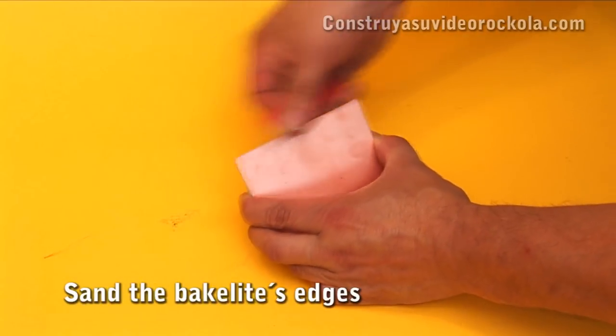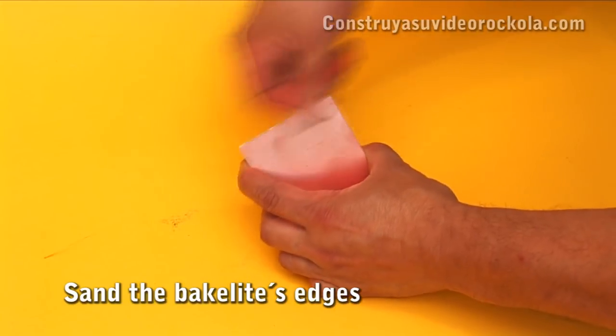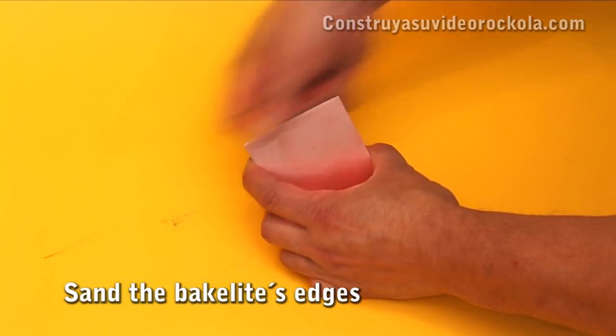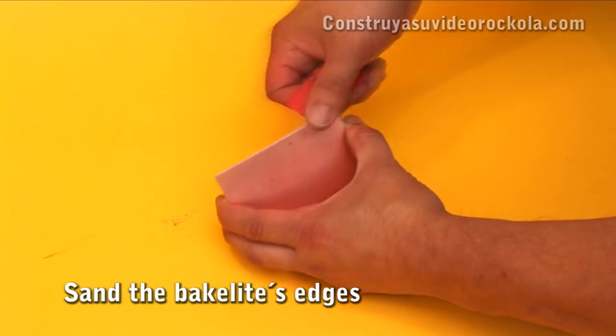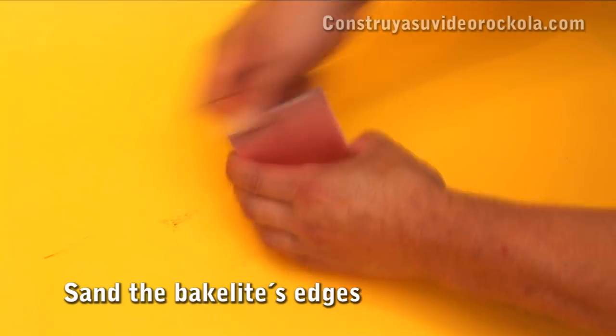We sand the bakelite's edge, deburring the remaining copper left after the cutting. This is done so when we iron, the board doesn't find any obstacles to uniform pressure on the plate, preventing good adhesion of the paper to the bakelite.